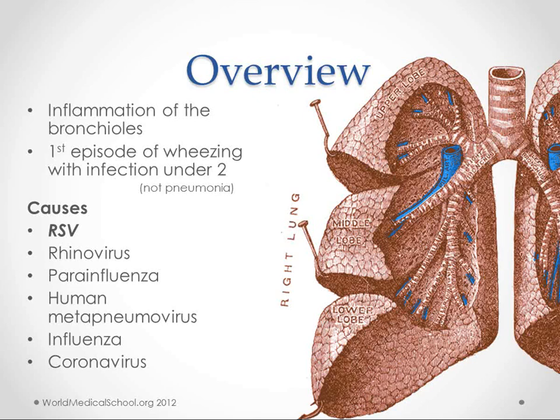The major causes: RSV is the number one cause, but your regular rhinovirus, parainfluenza, human metapneumovirus, influenza, coronavirus can also cause it. Rhinovirus and parainfluenza virus are our common upper airway infection causes. So you can see that bronchiolitis is more of a diagnosis of where we're infected and not exactly what disease is infecting the system.